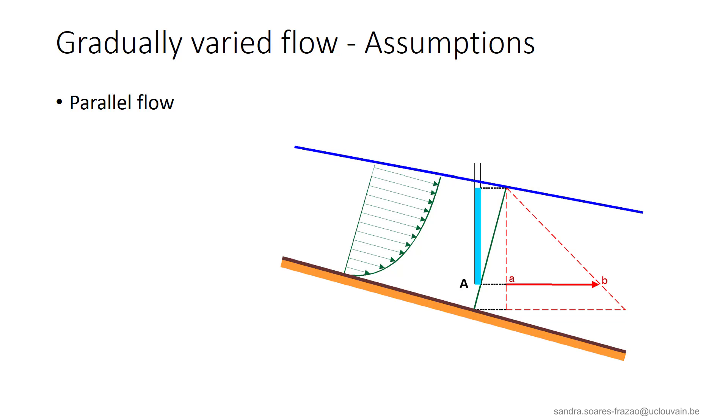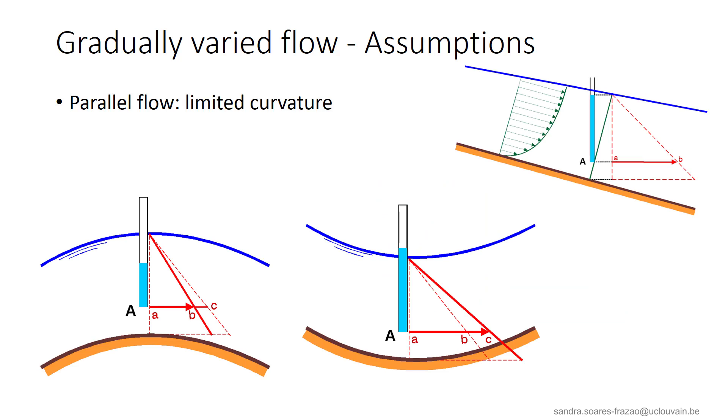Remember, this assumption is important as it allows to consider that the pressure distribution in the flow is hydrostatic. This assumption is valid provided that the curvature of the bed remains limited. We can see on the example on the left side that in the case of a significant convex curvature, the flow tends to detach from the bottom line because of centrifugal forces, which induces a local depression and thus a pressure distribution that is lower than the hydrostatic distribution.